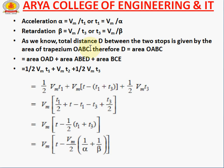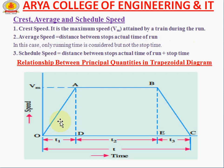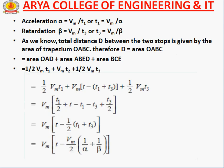The total distance D between two stops is given by the area of the trapezoid O, A, B, C. The total trapezoidal area is the sum of all distances: D = (1/2) VM·T1 + VM·T2 + (1/2) VM·T3. Substituting T2 = T − T1 − T3, we get D = VM·[T1/2 + T − T1 − T3 + T3/2], which simplifies to D = VM·[T − (1/2)(T1 + T3)].